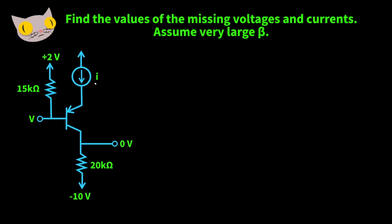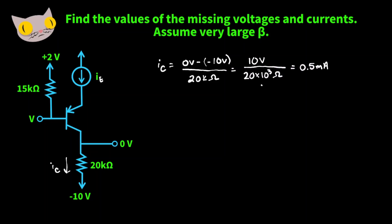Here's our next circuit. We have an emitter current here and a collector current here, and we want to find these currents and the missing voltage. The collector current equals 0 volts minus negative 10 volts over 20k ohms, giving us positive 10 volts over 20 times 10 to the third ohms, which is 0.5 milliamps. So we have our collector current and, as a freebie, our emitter current is also 0.5 milliamps.